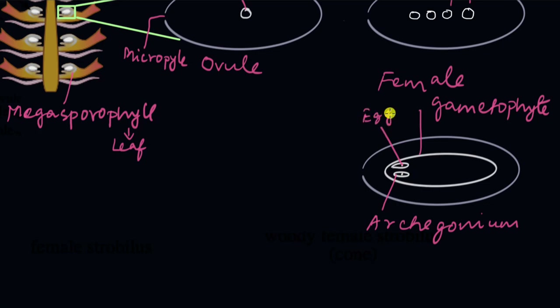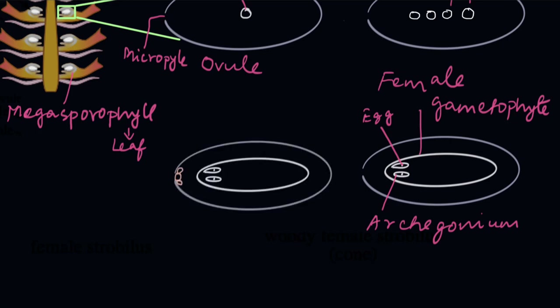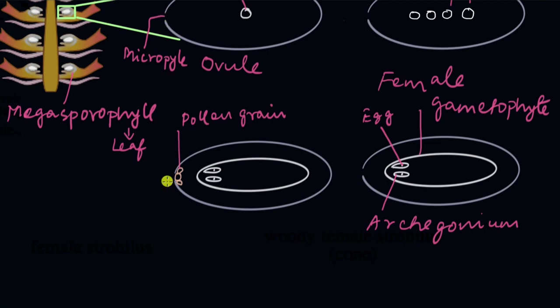For fertilization, the male gamete is required, which is present in the male gametophyte — and the male gametophyte is nothing but the pollen grain. The pollen grains in gymnosperms reach the female gametophyte by pollination, and pollination always occurs in gymnosperms with the help of the wind. Once the pollen grain reaches the ovule, it enters through the micropyle — that is why the gap was there.